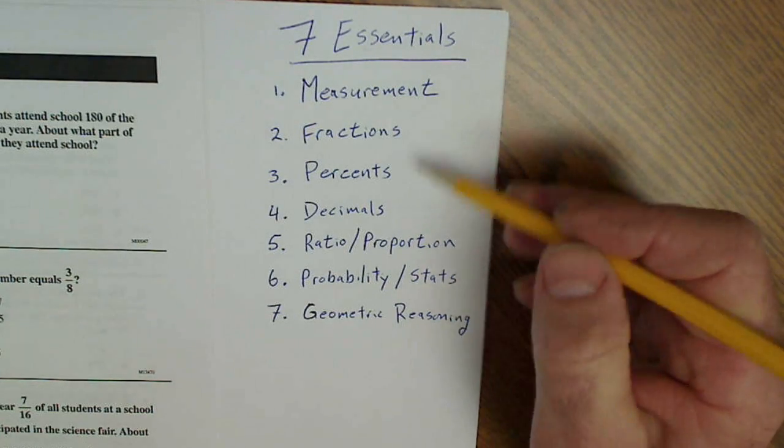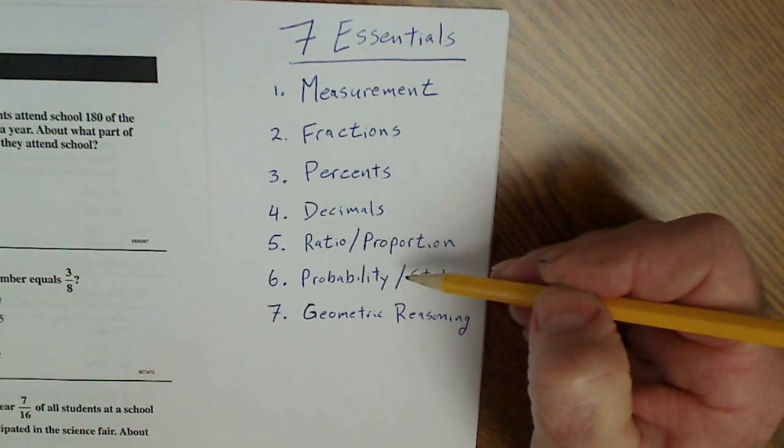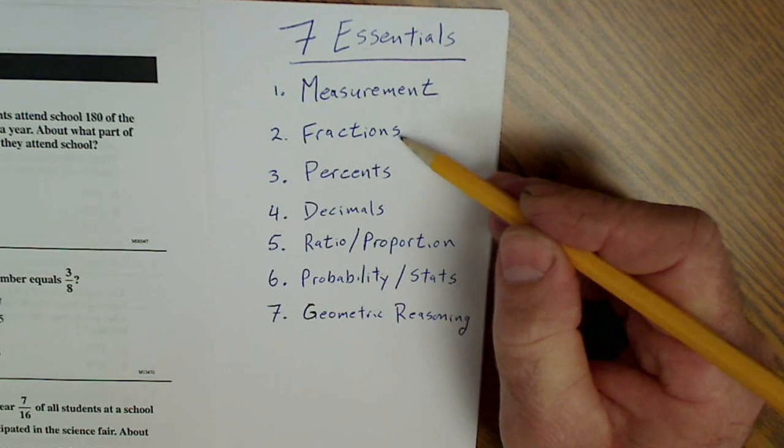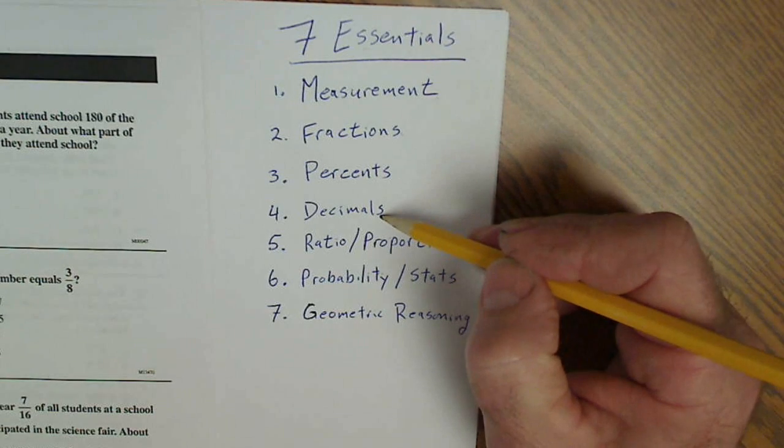These are the seven essentials of math, part of the fraction contraption program. These are really the fundamental skills you need to have to take pretty much any job or standardized test. Measurement, fractions, percent, decimals.